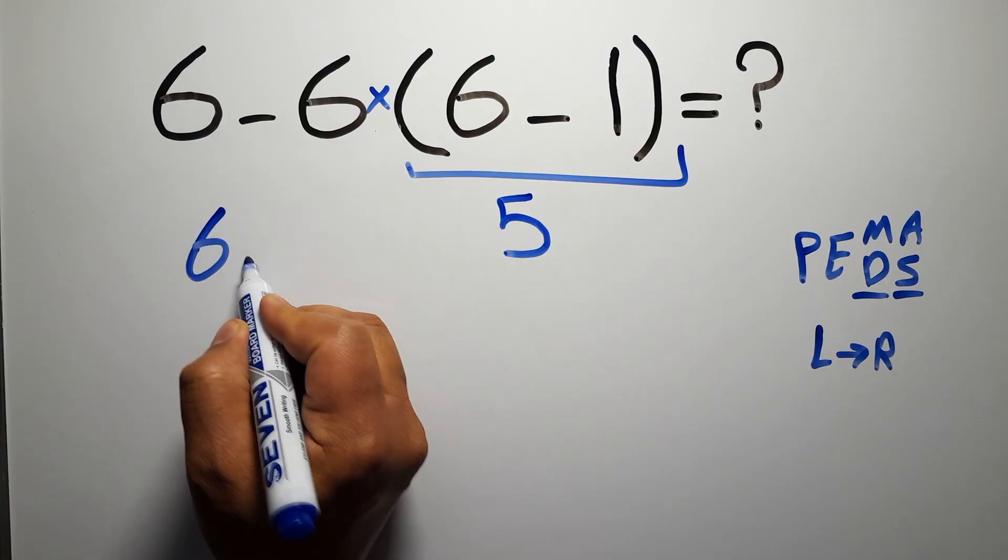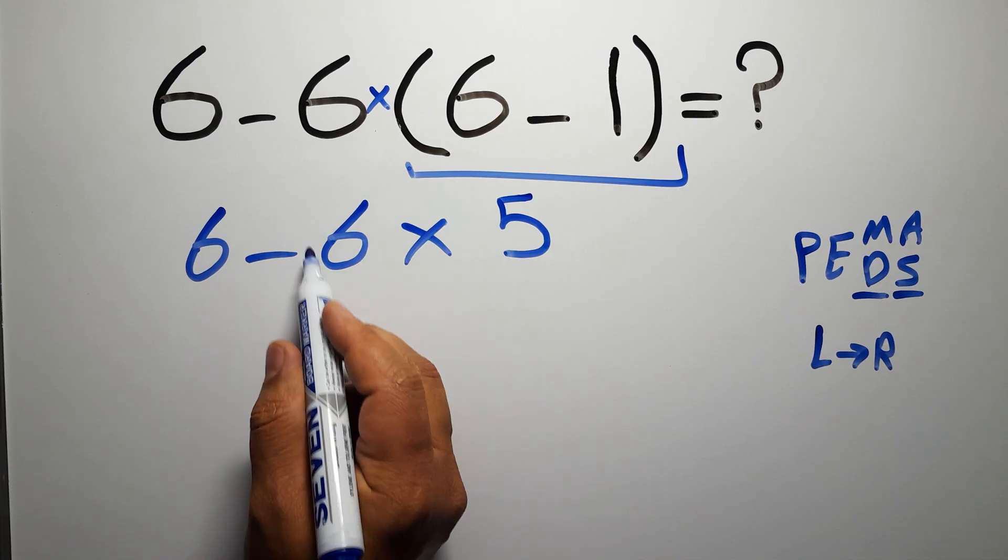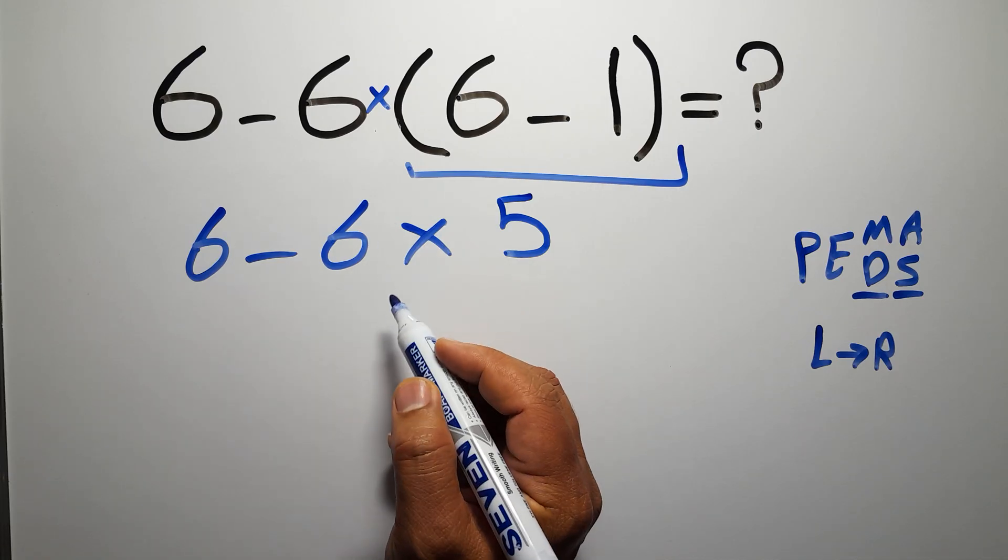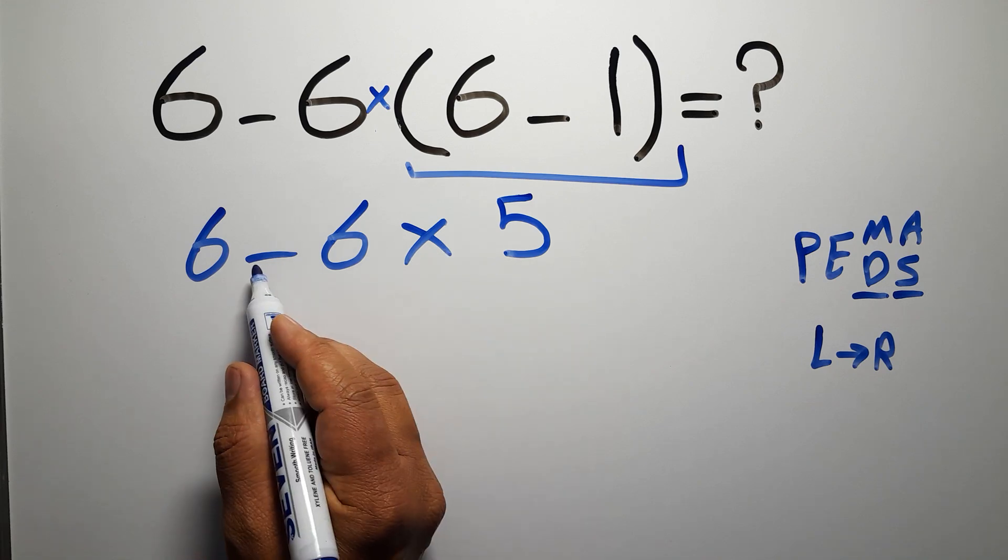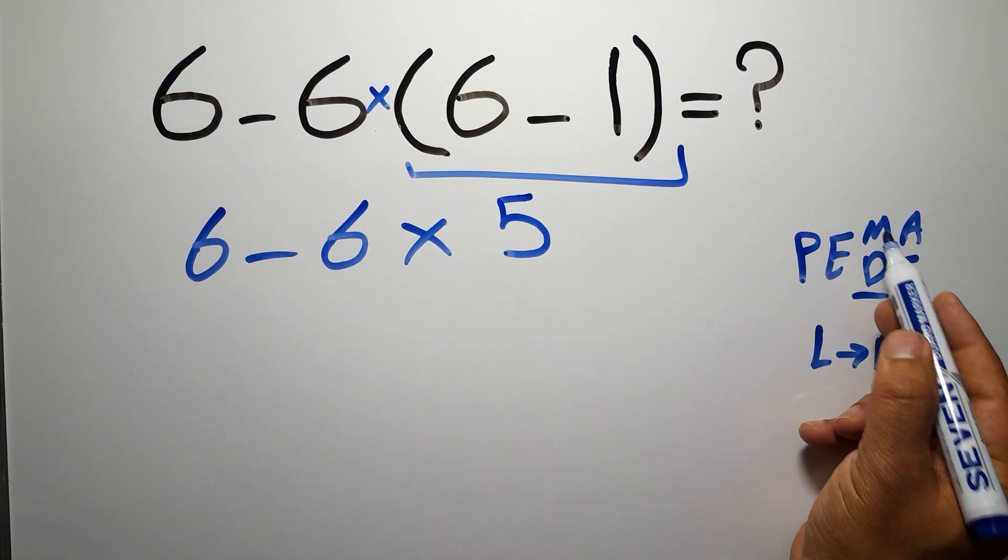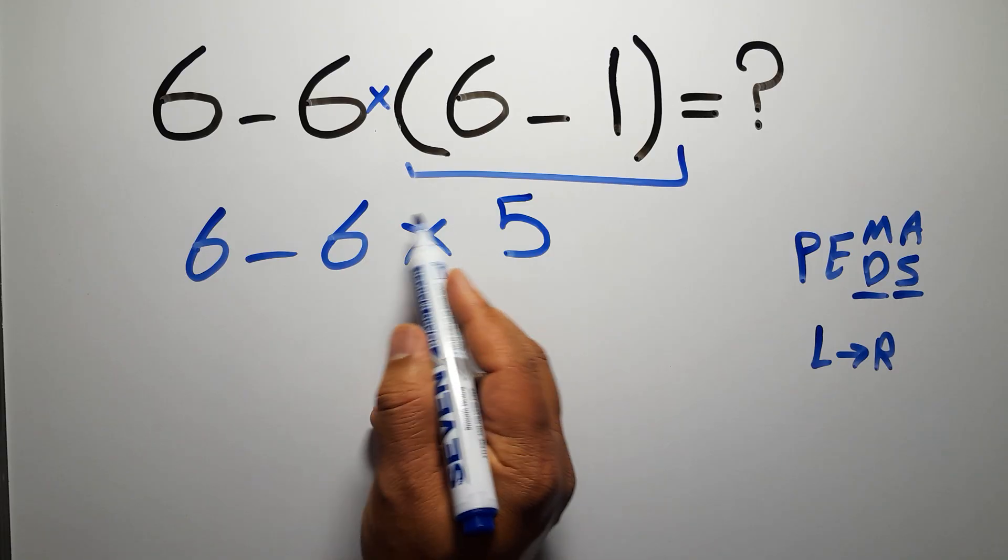So, 6 minus 6 times 5. Now we have 1 subtraction and 1 multiplication. According to PEMDAS, multiplication has higher priority than subtraction, because multiplication comes before subtraction. So here, first we have to do this multiplication.